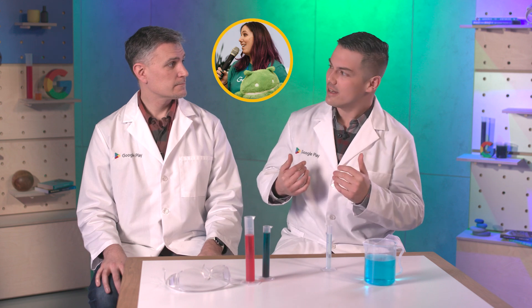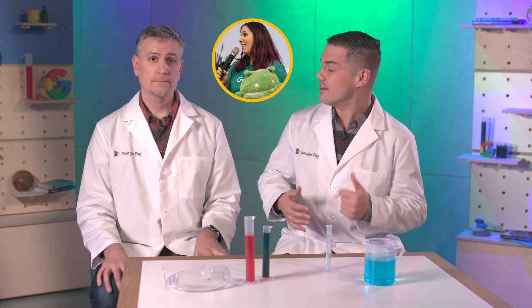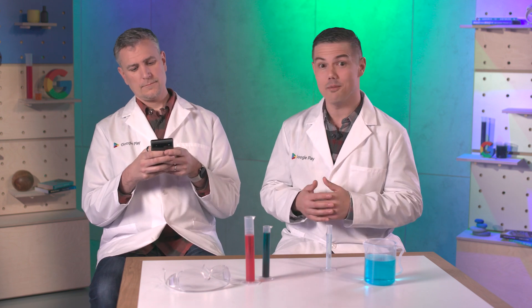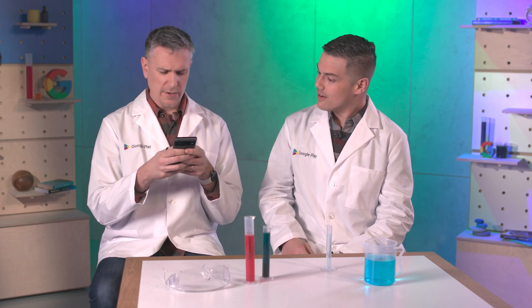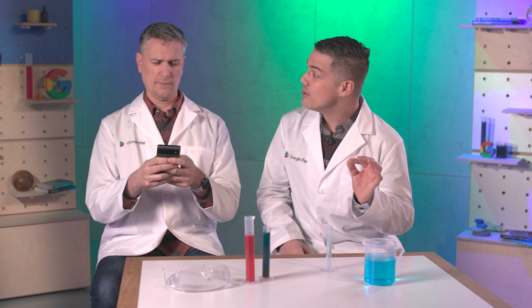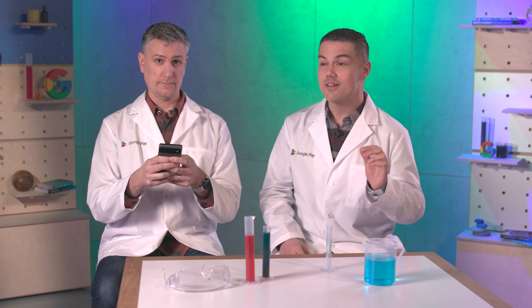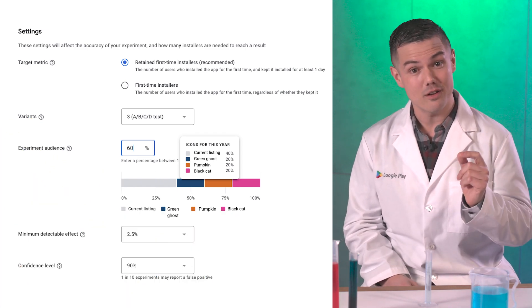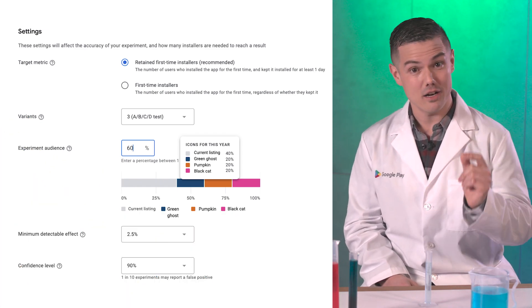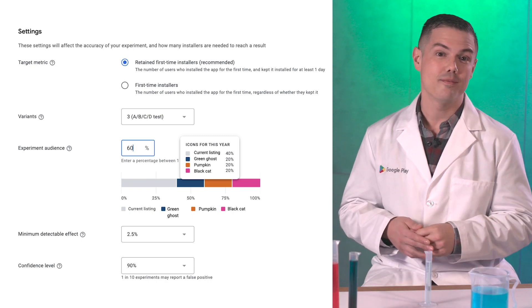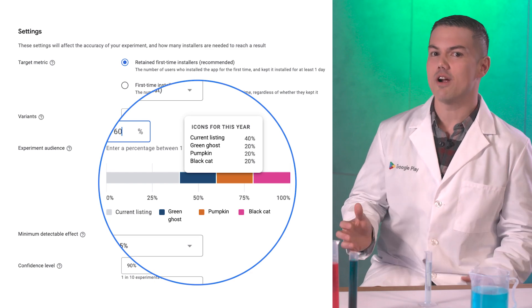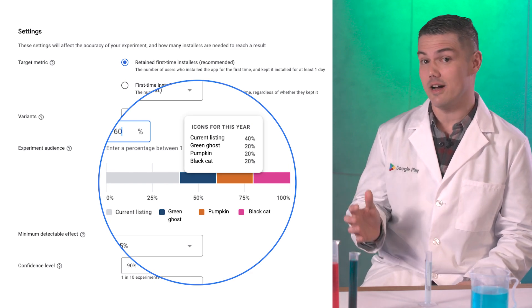My friend Diane and I have an app about Halloween jokes. It's super popular in October. Where do fashionable ghosts shop? Here's a real example of a store listing experiment Diana ran in October, our busy season. I liked our current store listing, but she insisted on running an experiment on different icons.